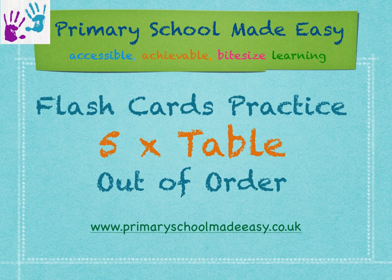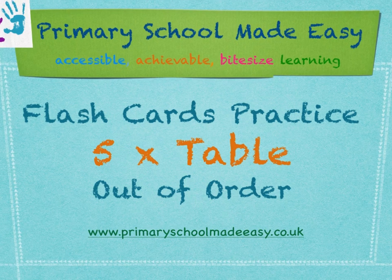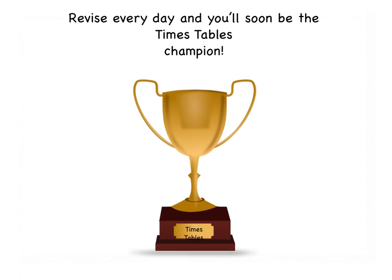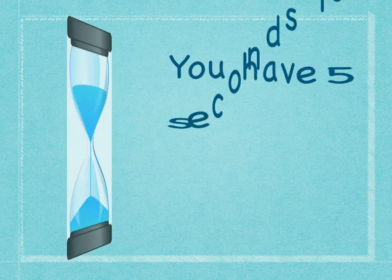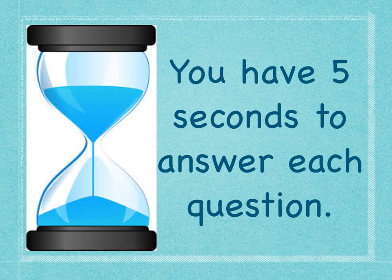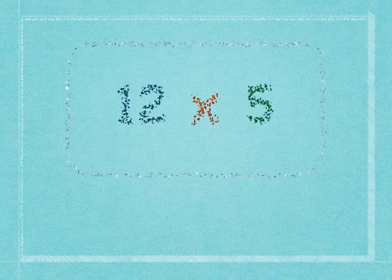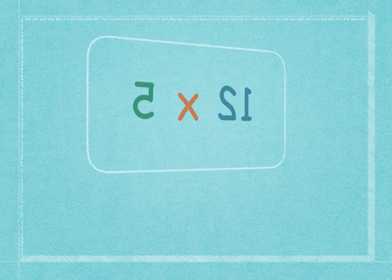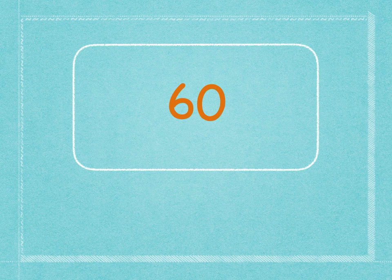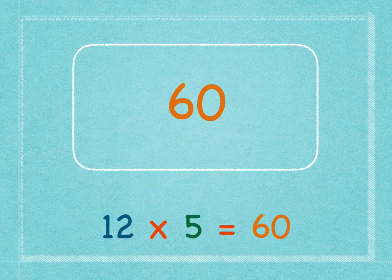This is flashcards practice for the five times table — out of order. Practice every day and soon you'll be the times tables champion. You have five seconds to answer each question. Twelve times five is sixty. Twelve times five is sixty.